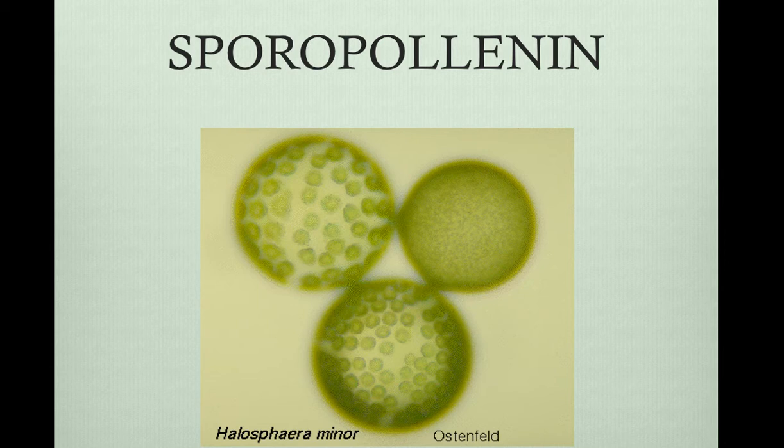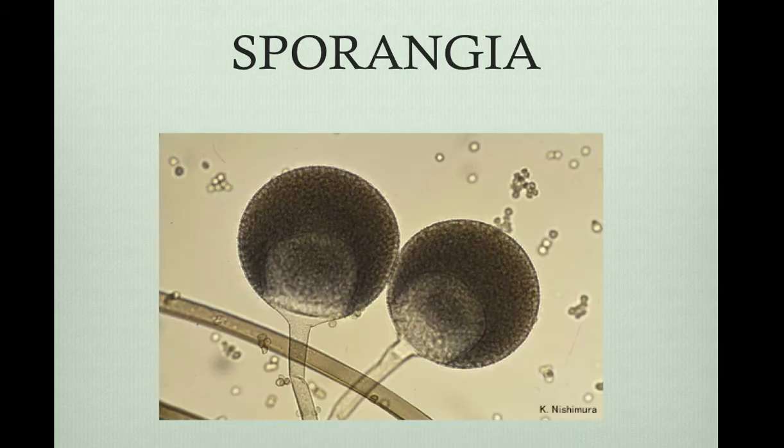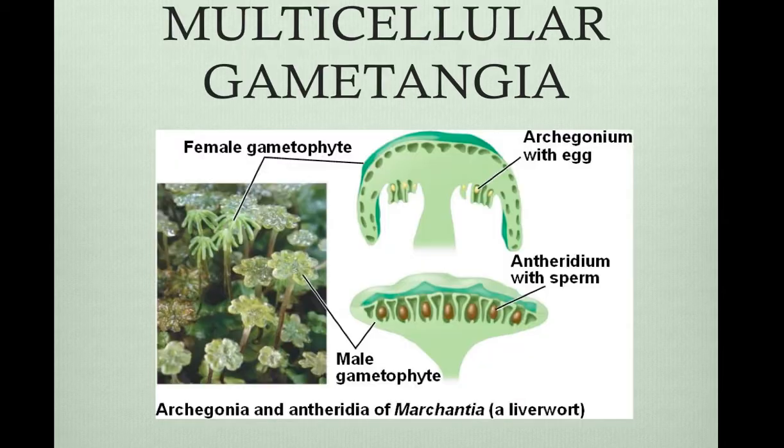Sporangia is a multicellular capsule in which meiosis occurs, and haploid spores develop. The multicellular gametangia is where gametes are produced in bryophytes, pteridophytes, and gymnosperms, but not in flowering plants. The female is called the archegonia, and the male is the antheridia.